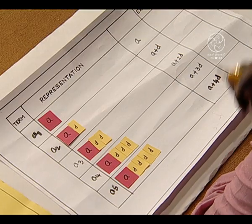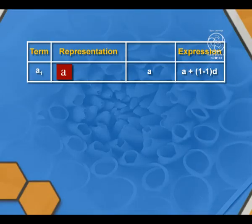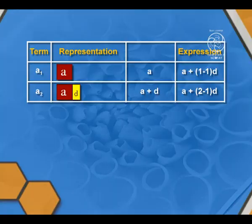Friends, what have we observed here? In the first term, it is just A. We can write it as A plus (1 minus 1) times D. Since 1 minus 1 is 0, this equals A. In the second term, we can write it as A plus (2 minus 1) times D. So the second term has (2 minus 1) times D.